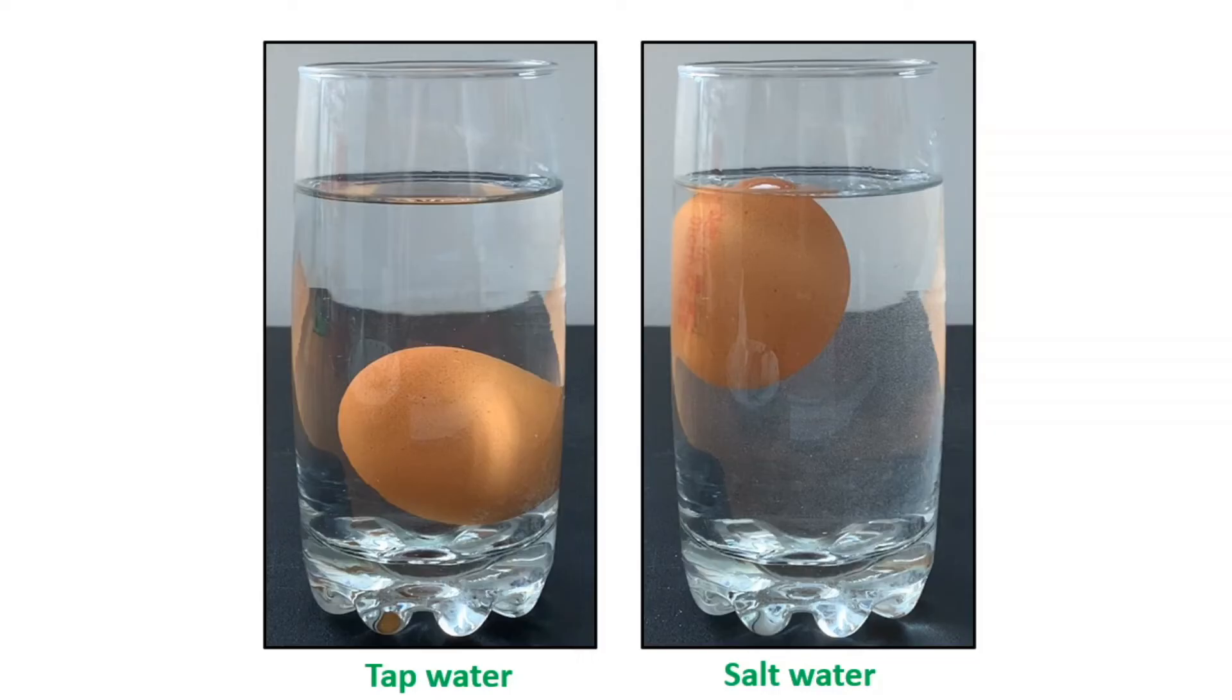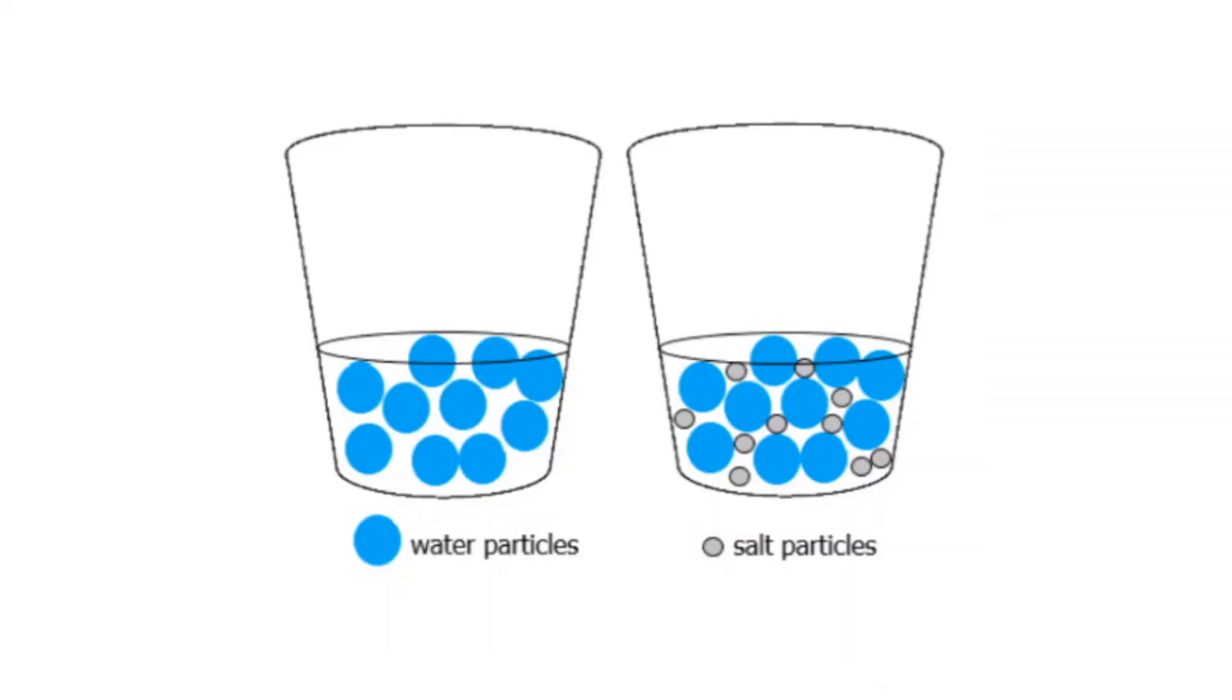But why did the density of the water increase when we added salt? The particles in liquid water aren't fixed like a solid so there are some spaces between them. When we added the salt the salt particles mixed with the water particles and spread out evenly. The addition of the salt to the tap water increased the mass which in turn increased the density of the water. This is why salt water has a higher density compared to tap water.